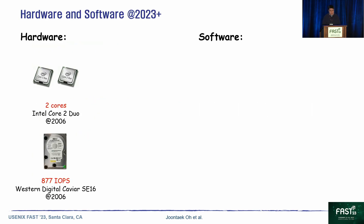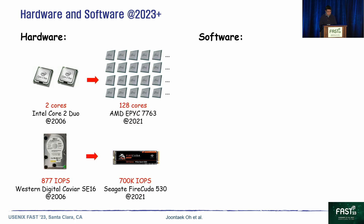Background and motivation. Hardware is rapidly evolving. We examined CPUs and storages released between 2006 and the present. In 2006, a CPU had two cores and a storage had a throughput of 877 IOPS. Now, one of the recent CPUs has 128 cores and one of the recent SSDs has 700K IOPS. In the past 17 years, the number of cores has increased 64 times and the throughput of storage has increased 798 times.